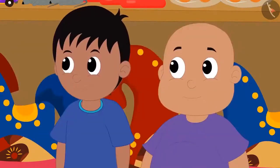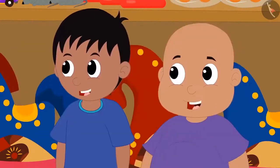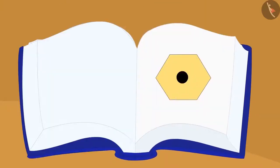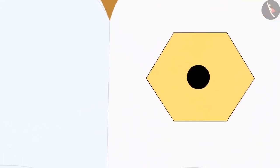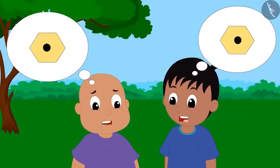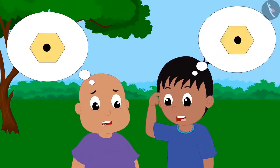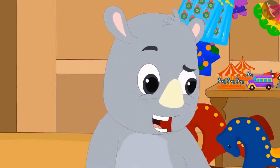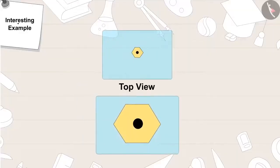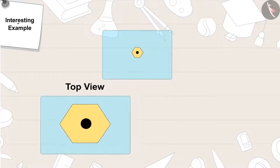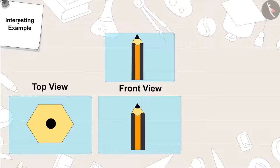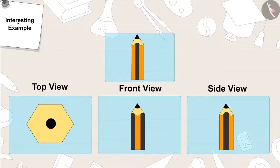Raju and Bablu got excited because they thought they would fool Gaggoo the same way they had fooled Babban. They immediately replied yes. Gaggoo opened the book, showed them a picture, and asked them to identify the object. It is very easy — it is a pencil! From the top view, a pencil looks like this. From the front view, it looks like this. And from the side view, it looks like this.